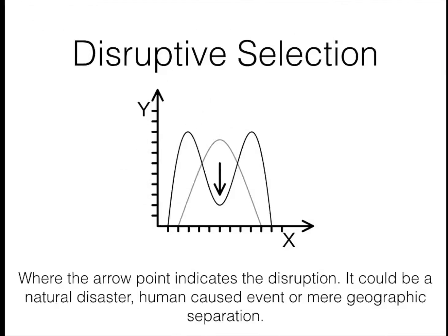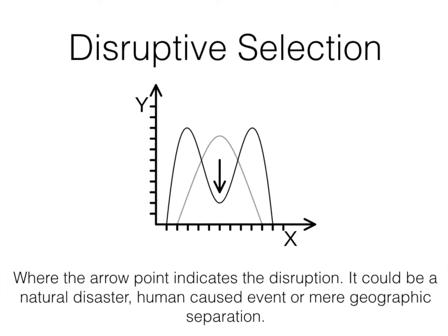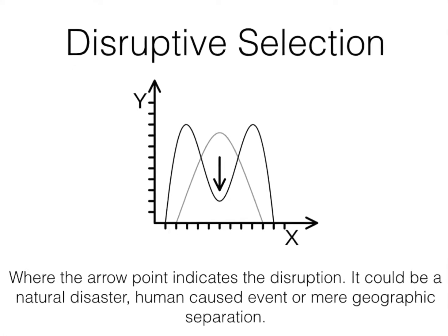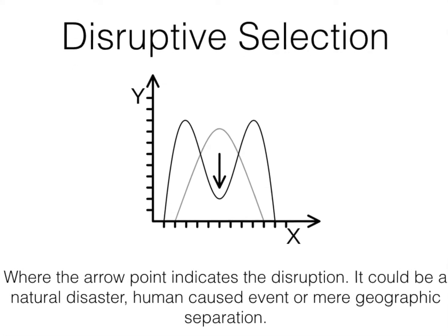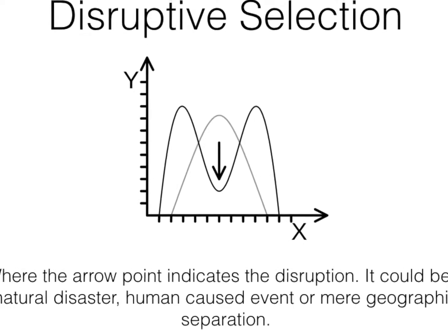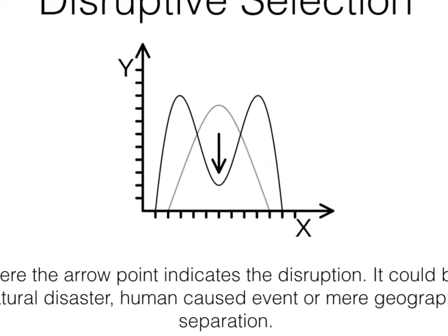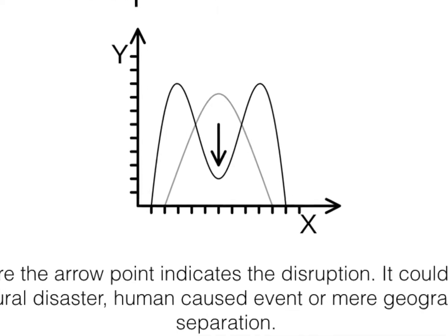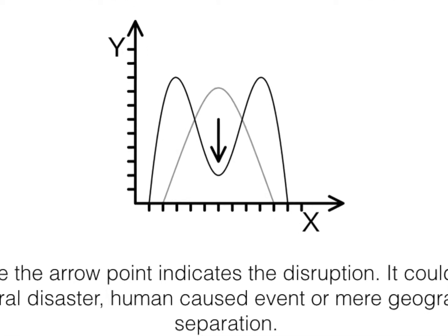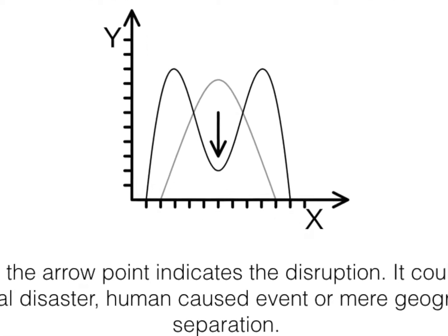Disruptive selection is when the normal population favours traits of two extremes and hence becomes more diverse. The frequency of the most common trait decreases, and two separate populations start to diverge.